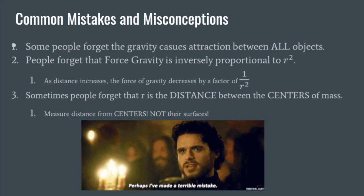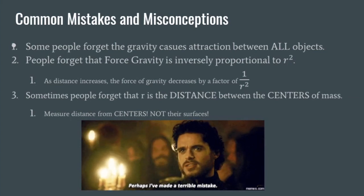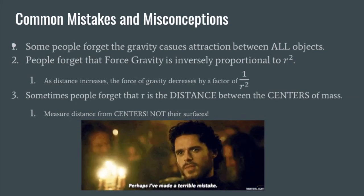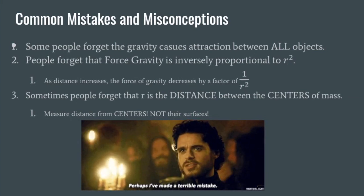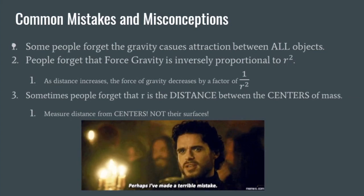And there we go — we have made it to the end of our gravity notes. Please make sure you remember what we just talked about. Key takeaways: the Universal Law of Gravity helps us figure out the force of gravity between two objects with mass. As mass increases, force of gravity increases. And as the distance gets bigger — as these objects get further and further away — their force of gravity gets smaller and smaller.